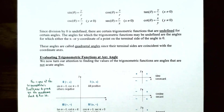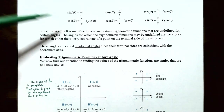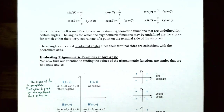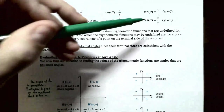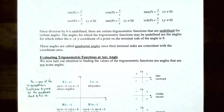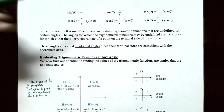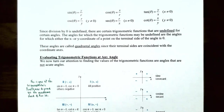Since division by zero is undefined, certain trigonometric functions are undefined for certain angles. These are angles for which either the x-coordinate or y-coordinate of the point on the terminal side is zero — called quadrantal angles, since the terminal sides coincide with the coordinate axes. Cosecant and cotangent are undefined when y = 0 (on the x-axis), and secant and tangent are undefined when x = 0 (on the y-axis).